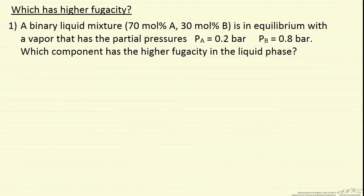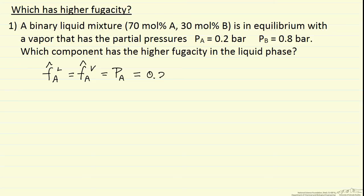For this vapor-liquid mixture of a binary component, we want to know which component has the higher fugacity in the liquid phase. We can take advantage of the fact that the fugacity of component A in the liquid phase equals the fugacity of component A in the vapor phase — using hat notation to indicate a component in a mixture. At these low pressures, the fugacity is really close to the partial pressure; for an ideal gas, it is indeed the partial pressure. So the fugacity of A is just the partial pressure of A, which is 0.2 bar.